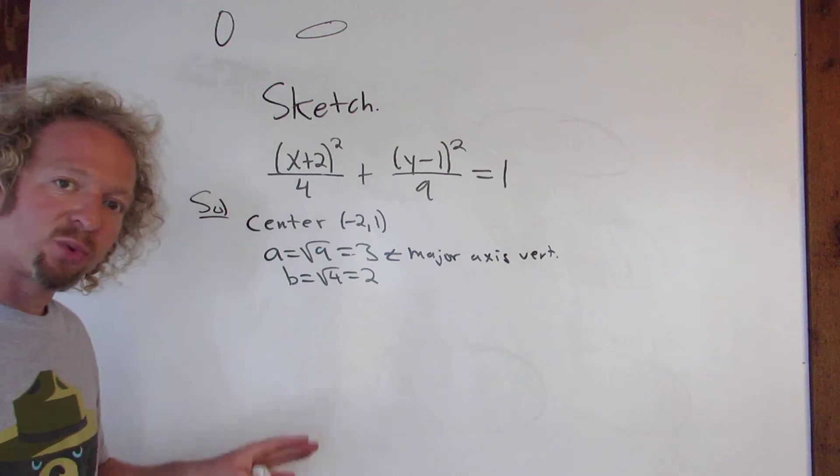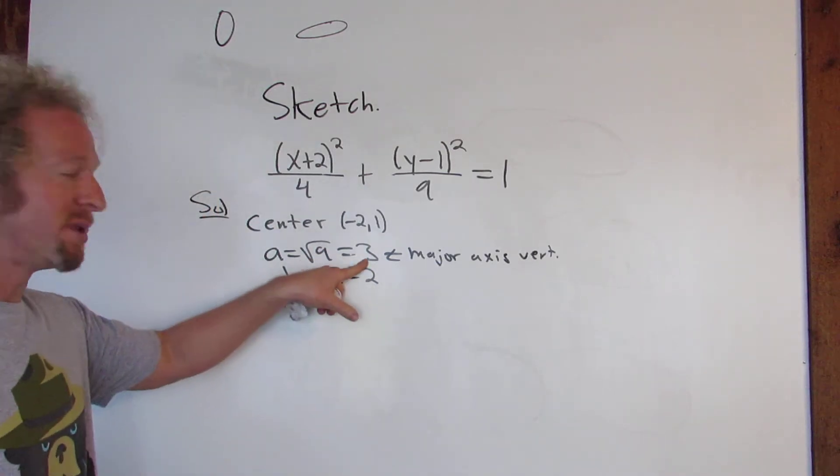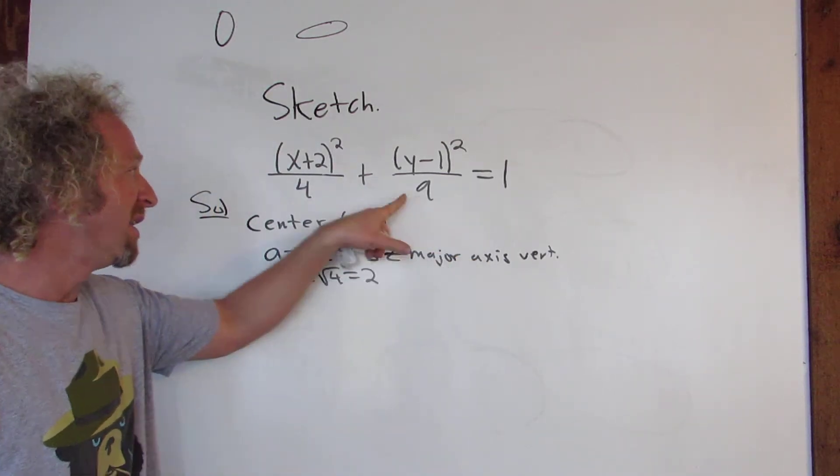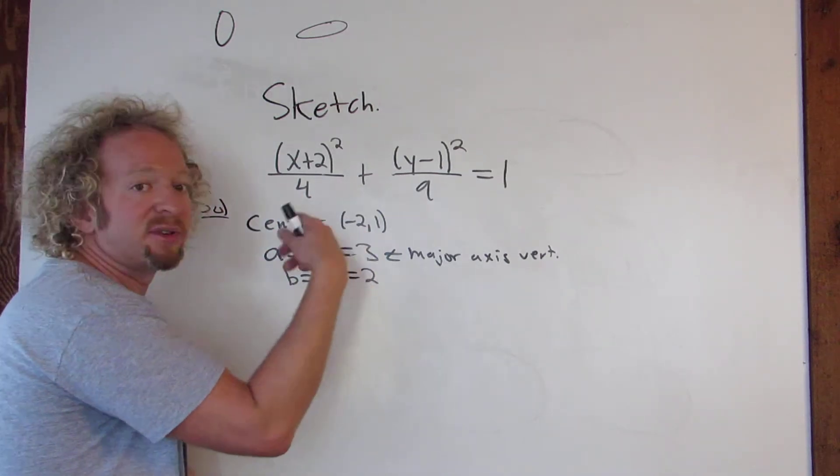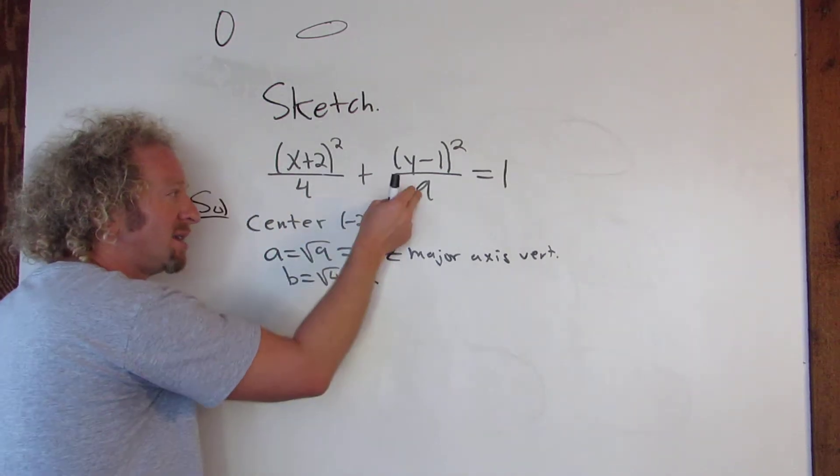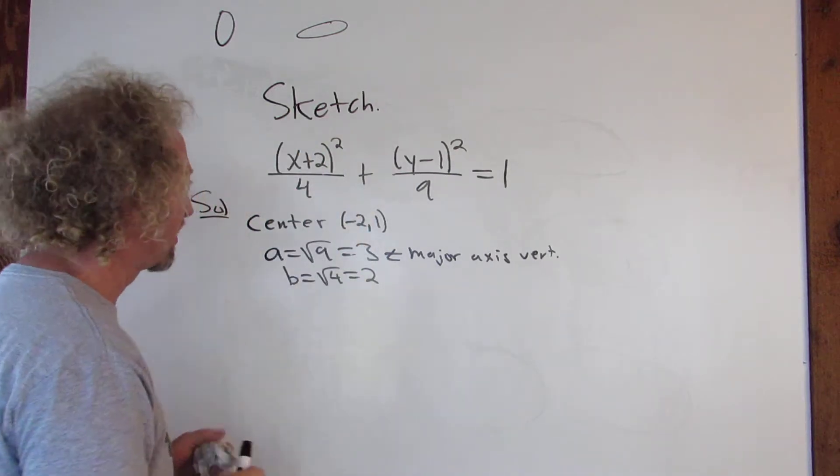So what we're going to do next is we're going to plot the center and then we're going to go up and down by a because it's vertical. If the 9 had been here, then we'd plot the center and then go left and right by a, right? But it's not, it's here, so we're going to go up and down. Alright, let's go ahead and do this graph.